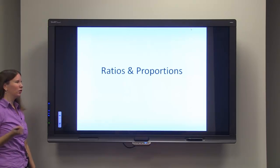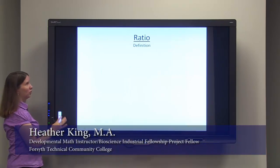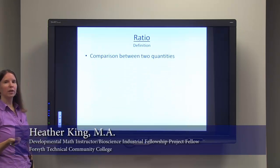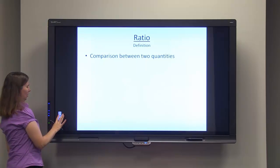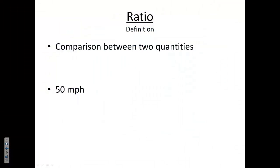We're now going to talk about ratios and proportions, starting first with ratios and a definition. A ratio is just a comparison between two quantities. An example that you see on a daily basis: 50 miles per hour. I can rewrite 50 miles per hour as 50 miles over one hour, so I'm comparing miles to hours.